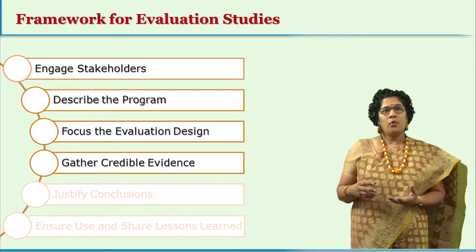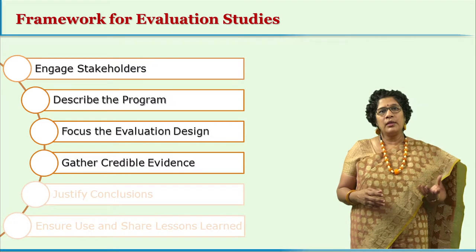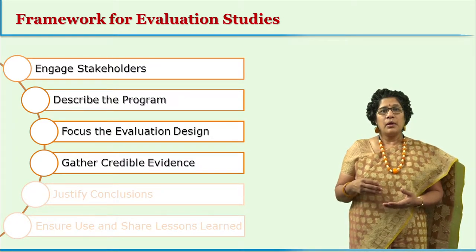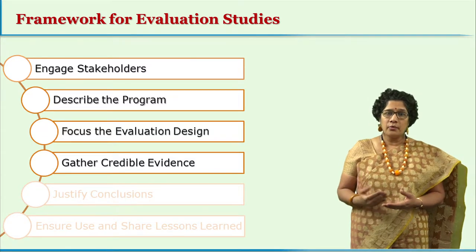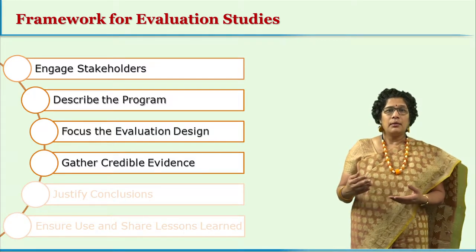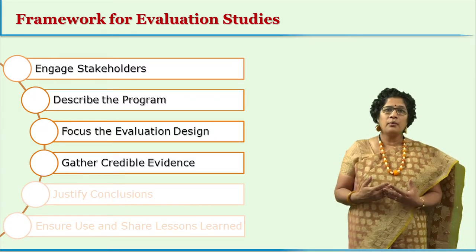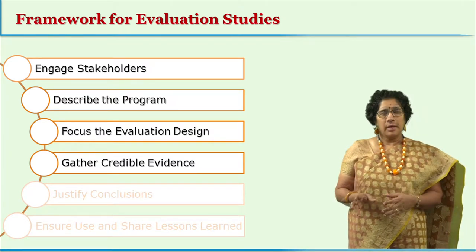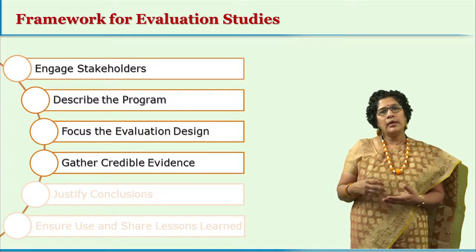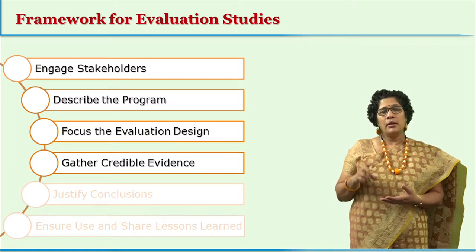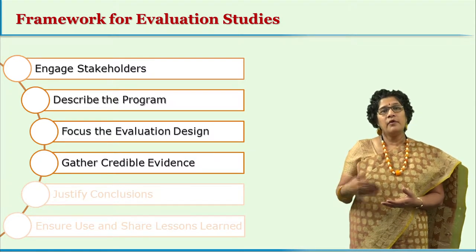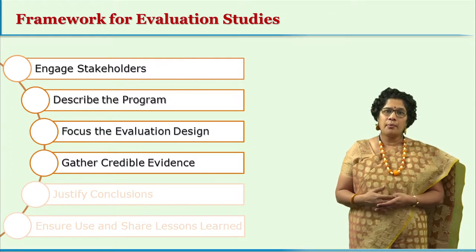The fourth step is gathering credible evidence. The kind of resources used, the kind of data used, and the kind of instruments used for collecting data are all detailed out. It is ensured that credible data is collected — data which is authentic and on the basis of which findings can be made and generalized for that particular program.